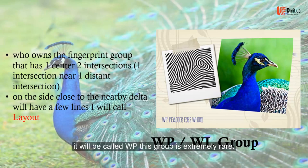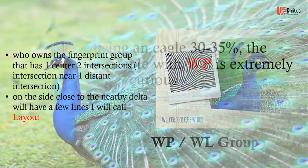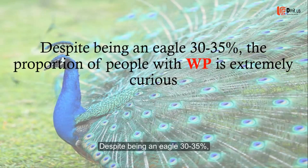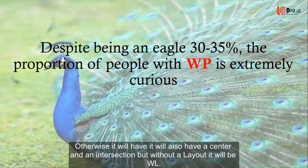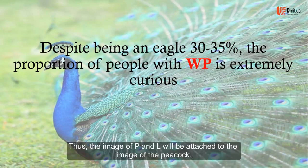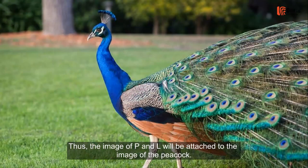This group is extremely rare. Despite being roughly 30 to 35 percent of the whorl group, the proportion of people with WP is extremely rare. Otherwise, if it also has a center and an intersection but without a layout, it will be WL.